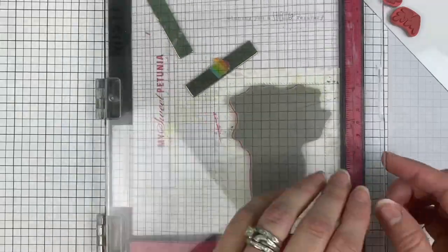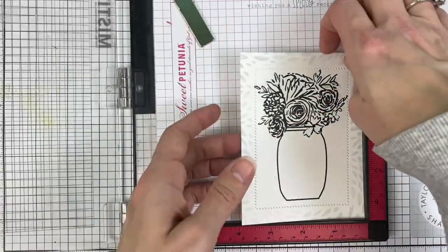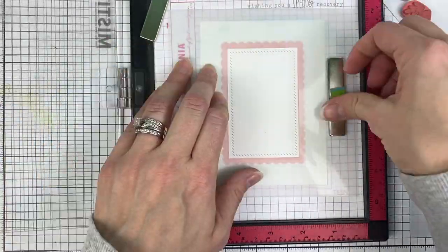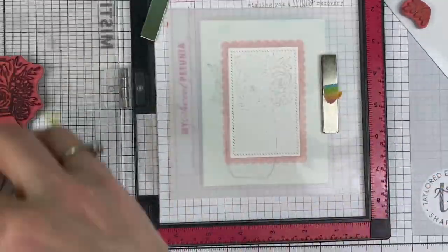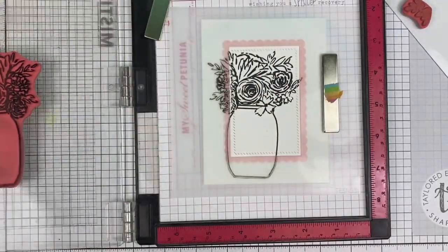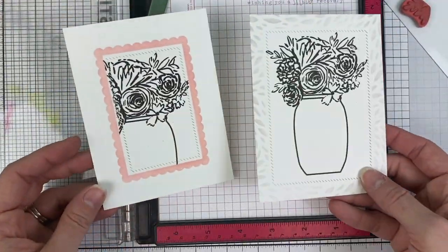Now I have the large bouquet stamp from the Brimming with Love set, and I've placed that down onto the center of my larger panel, stamping that all the way into the framed piece. Now I'm lining up with the scalloped frame and I'm just going to stamp a portion of that bouquet. I thought it would be fun to show you how you can use this stamp set in both a large and a small frame.